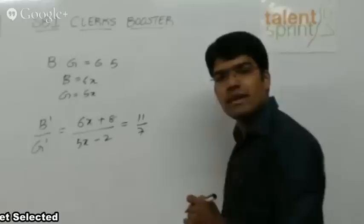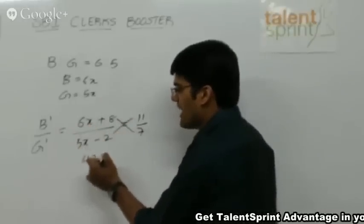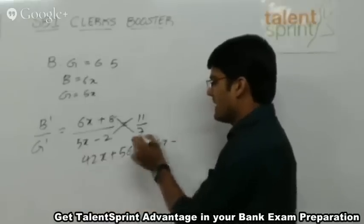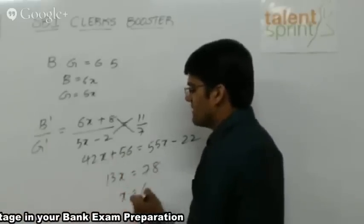Now can you simplify this to get the value of x? Cross multiply 7 into 6, 42. 42x plus 56 equals to 55x minus 22. So from this you will get 13x equals to 78 or x equals to 6.